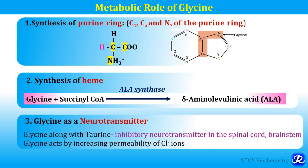Third is the action of glycine as a neurotransmitter. Glycine, along with taurine, acts as an inhibitory neurotransmitter in the spinal cord and brain stem. It acts by increasing the permeability of chloride ions. So glycine is important as a neurotransmitter.